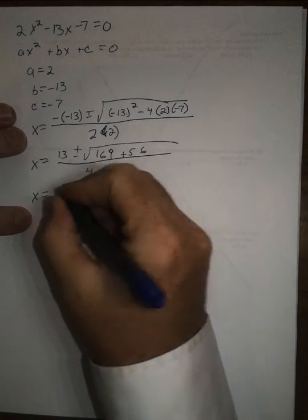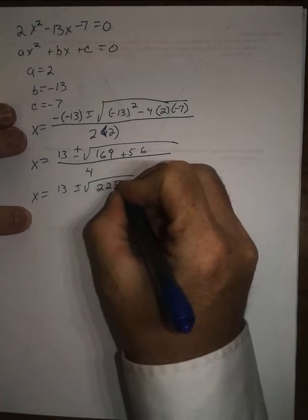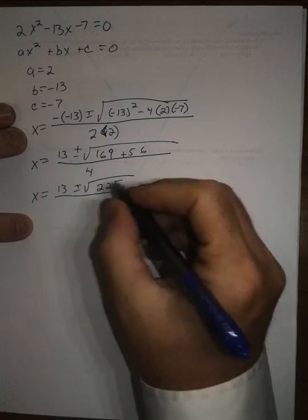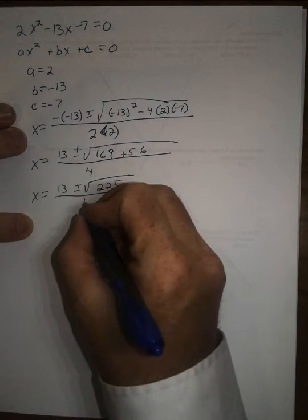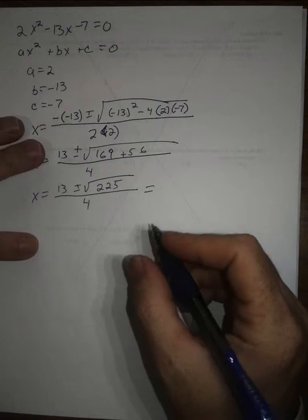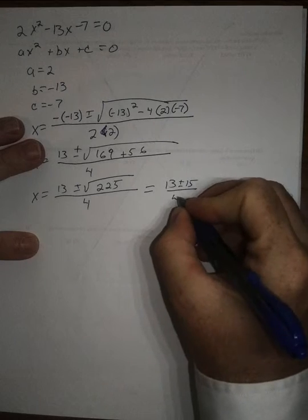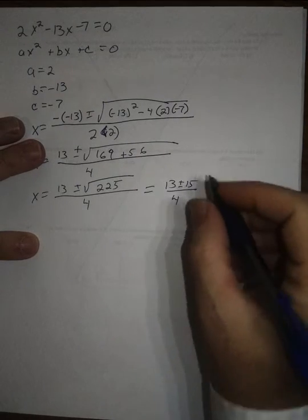Okay, so this is x equals 13 plus or minus the square root of 225, principal square root I should say, all over 4. The principal square root of 225 is 15, so this becomes 13 plus or minus 15 all over 4.